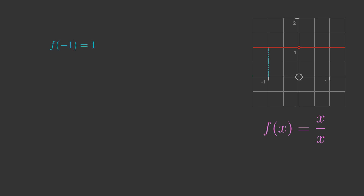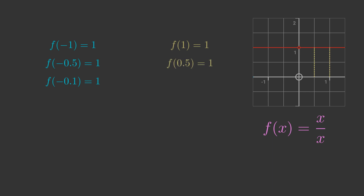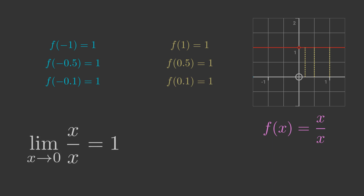When x is minus 1, the value of the function is 1. When x is minus 0.5, the value is 1. When x is minus 0.1, the value is 1, and so on. As we approach 0 from the left, the value is always 1, no matter how close we get, provided we don't actually reach 0. Similarly, when x is plus 1, plus 0.5, or plus 0.1, the value is 1. So the limit of x over x as x approaches 0 is 1, even though the value of the function at x equals 0 is undefined.